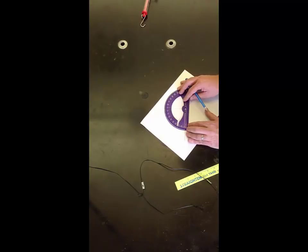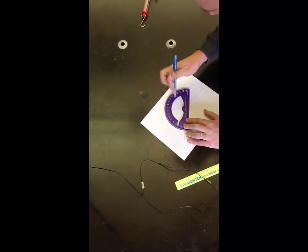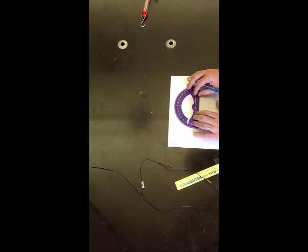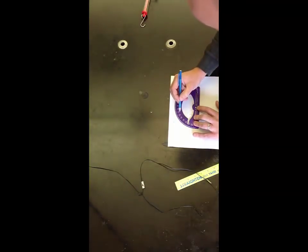Once your lines are in and all connected, take your protractor and measure the angle between each set of vectors. Record that angle down on the paper. Again ask yourself what should all three of those angles add up to. If they do not add up to that number double check your work and see why they don't.